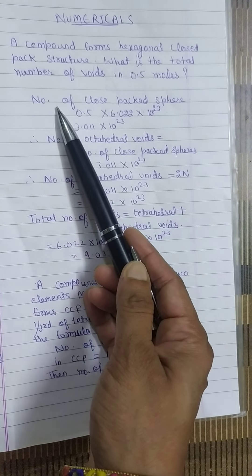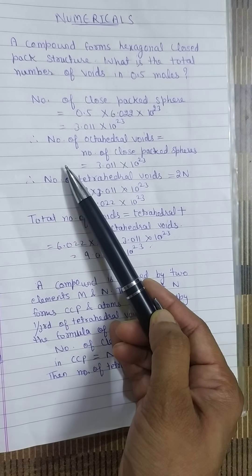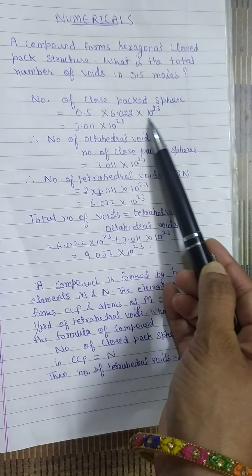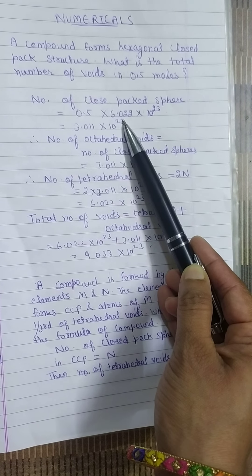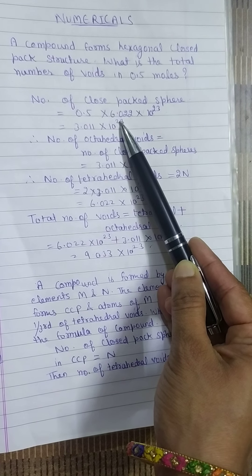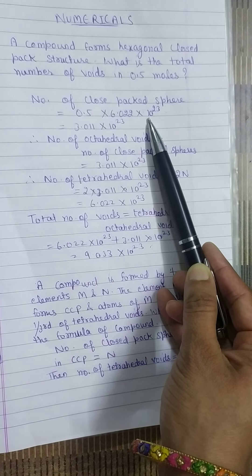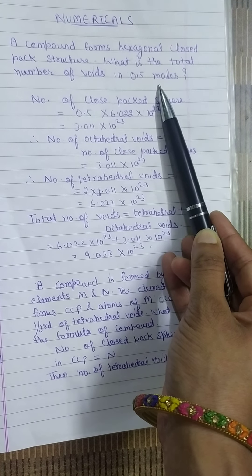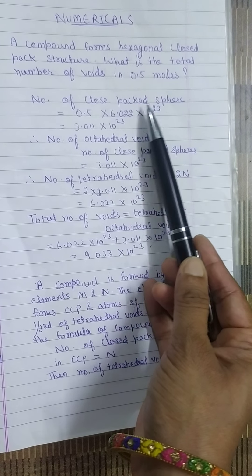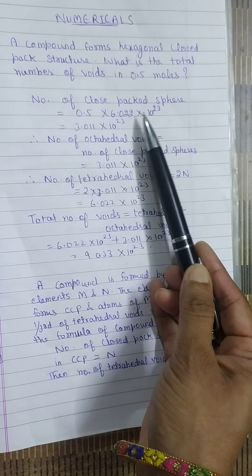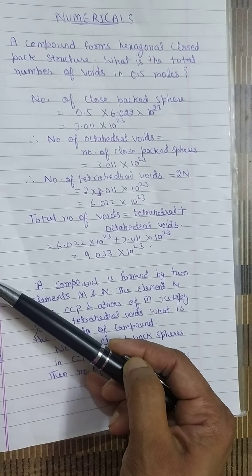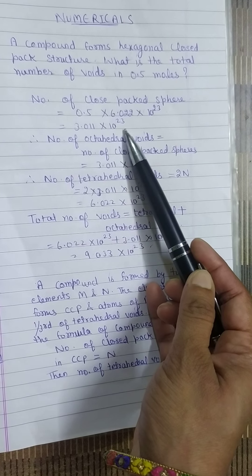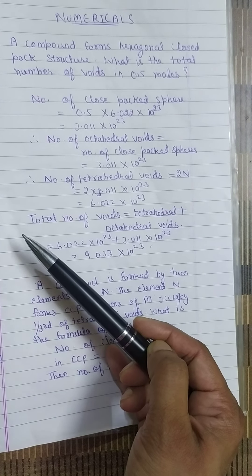Let us find the number of closed-packed spheres. One mole contains Avogadro's number of spheres, that is 6.022 × 10²³. So for 0.5 moles, the number of closed-packed spheres equals 0.5 × 6.022 × 10²³, which comes out to 3.011 × 10²³.